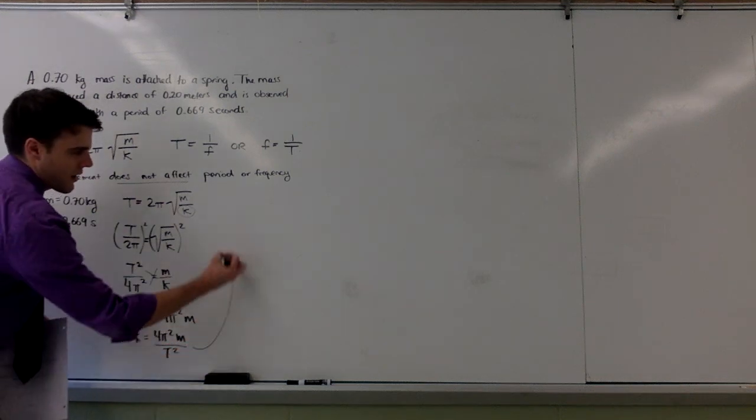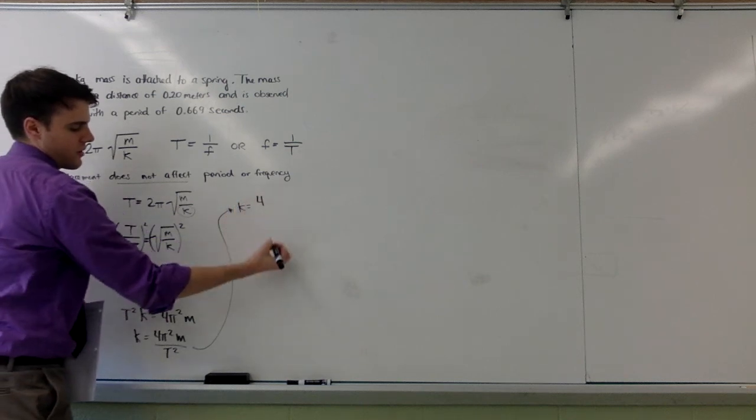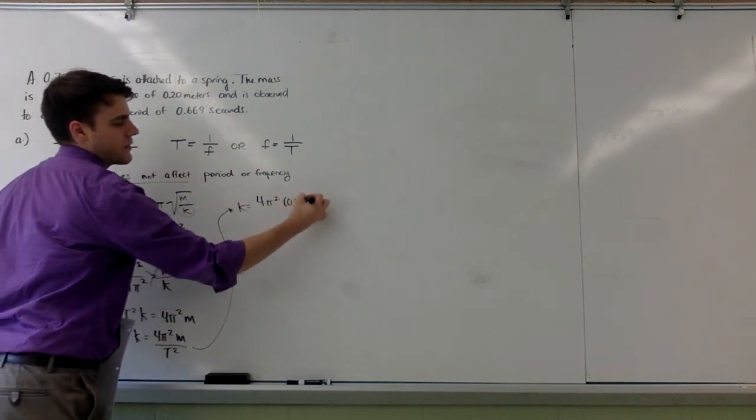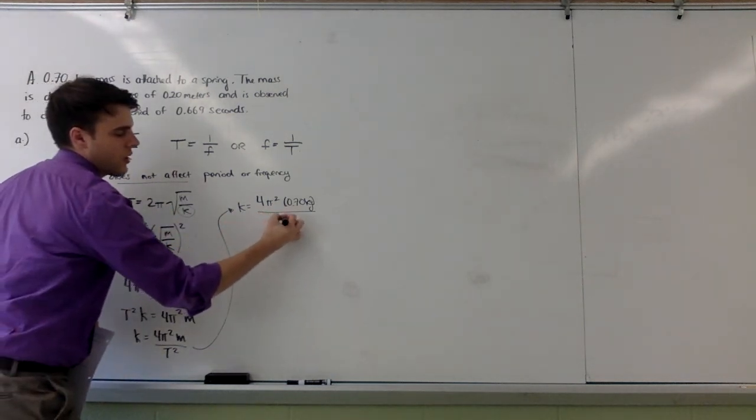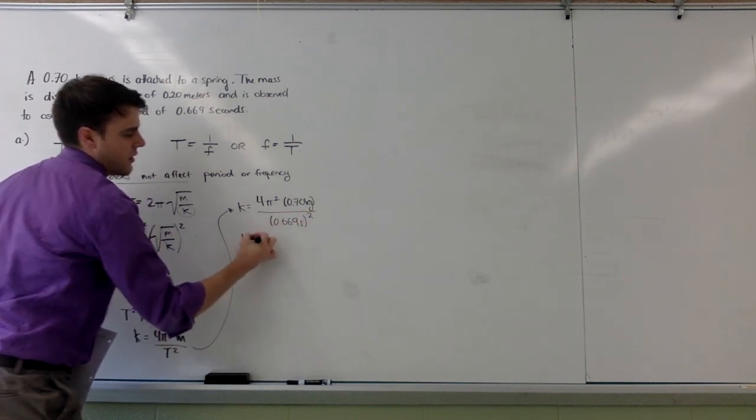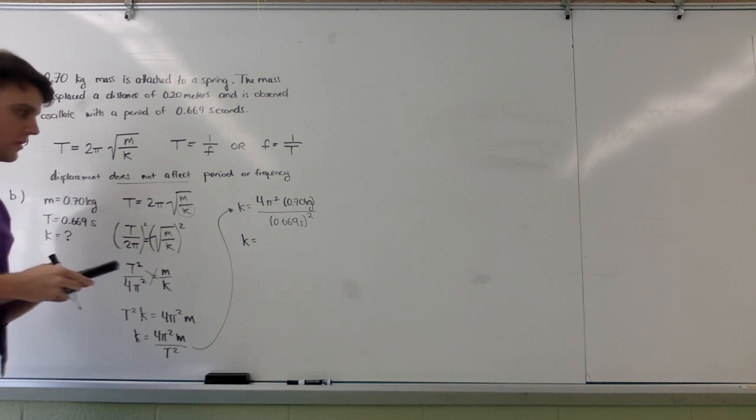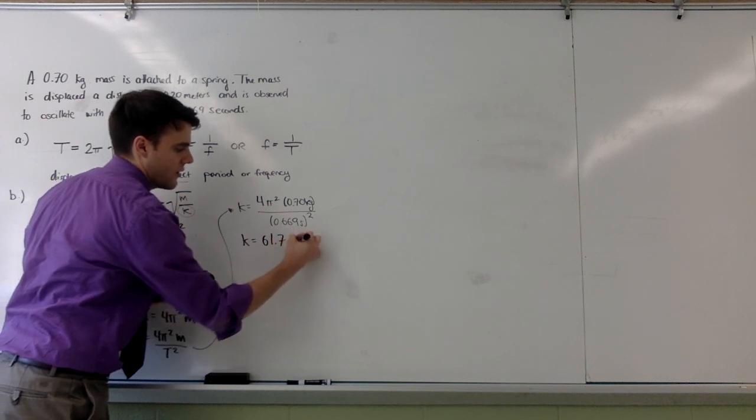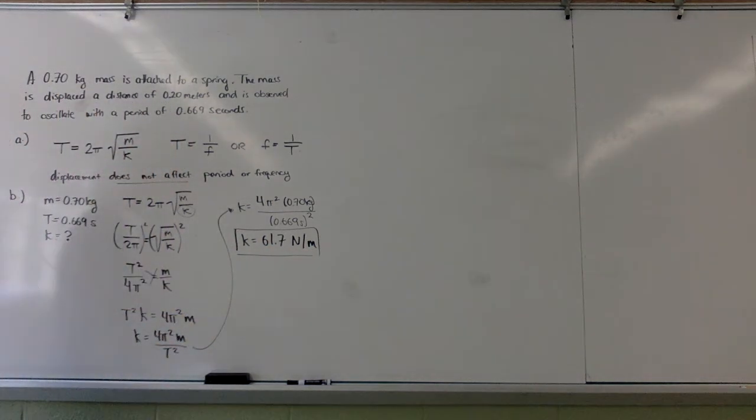Since I'm out of room at the bottom, I will drag this up here and substitute some values. So k will be equal to 4 times pi squared times the mass of 0.7 kilograms all over the period squared, which is 0.669 seconds squared. Substituting these values and using a calculator will yield 61.7, and the units for a spring constant are newtons per meter. So that is my value for the spring constant.